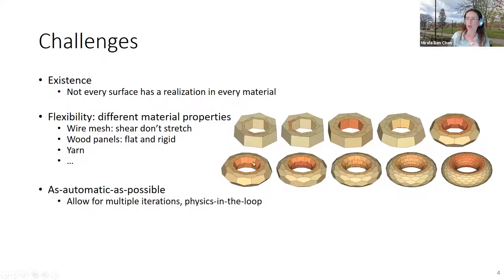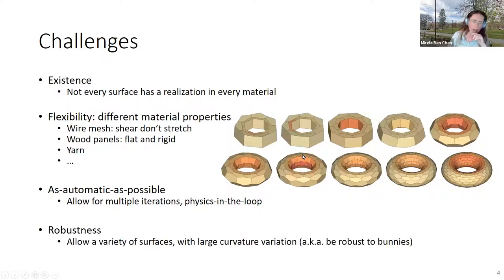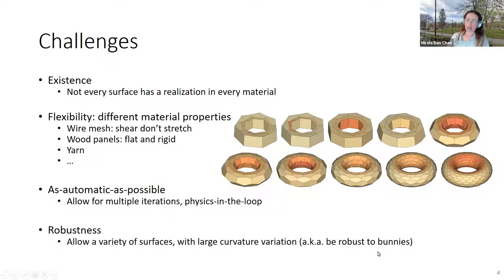We can generate many resolutions to check stresses for each one. Finally, we want the algorithm to be robust — in the case of realization, we want to enable many types of surfaces even if they have large curvature variations. Many structures in architecture have small curvature changes, but we want to handle even stronger changes. I call this being robust to bunnies, because the Stanford bunny is a good example of a mesh with many different types of curvatures and geometries.